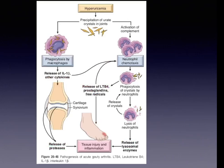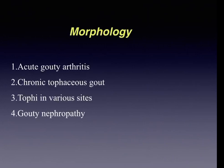The mechanism of acute inflammation in gout includes phagocytosis by macrophages, phagocytosis of crystals by leukocytes, activation of the complement system, and release of lysosomal products in the joint effusion, finally resulting in tissue injury and inflammation. There are four distinctive morphologic changes in gout: acute gouty arthritis, chronic tophaceous gout, tophi in various sites, and gouty nephropathy.